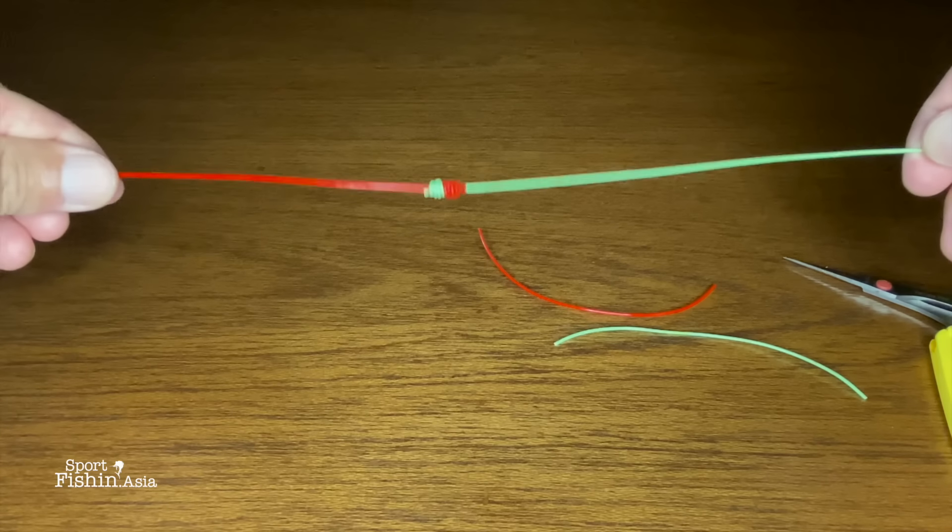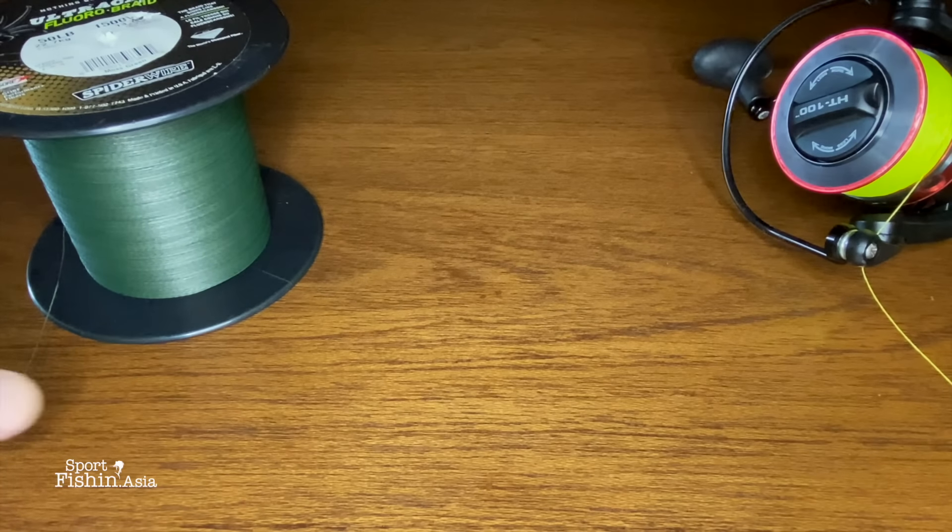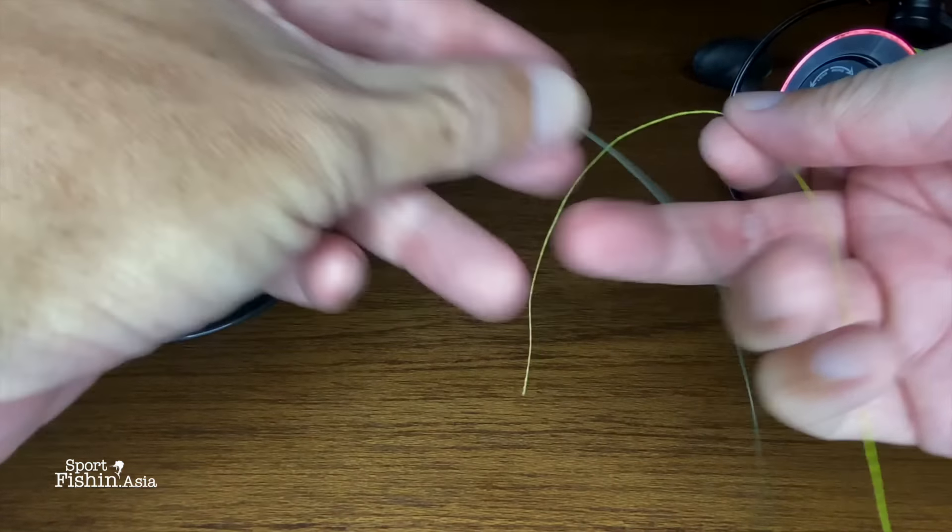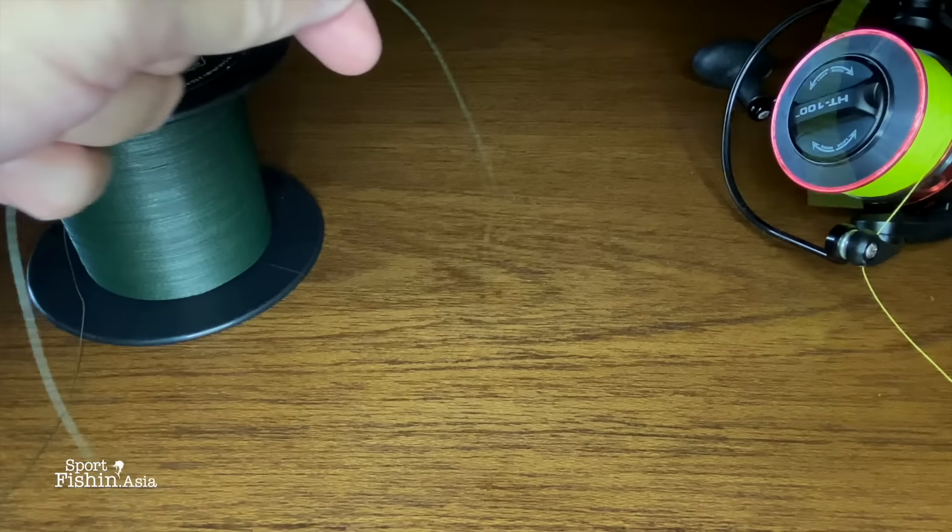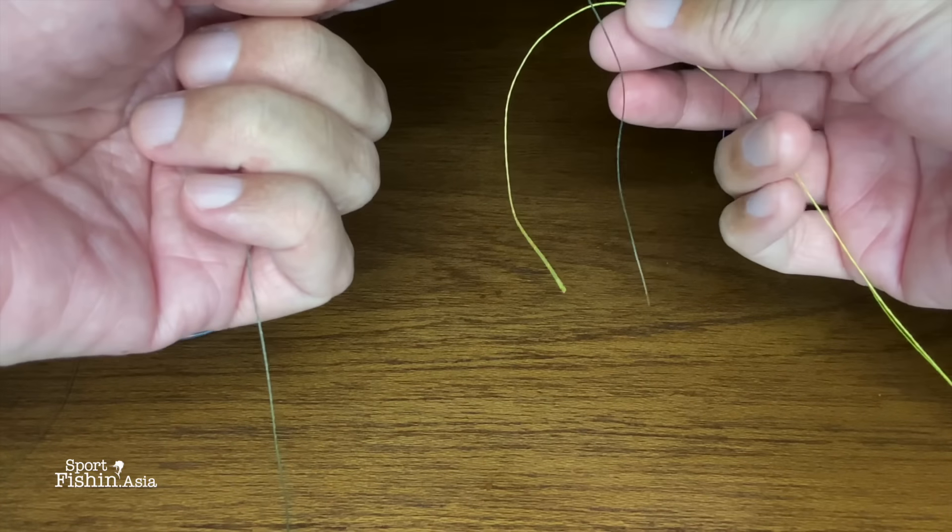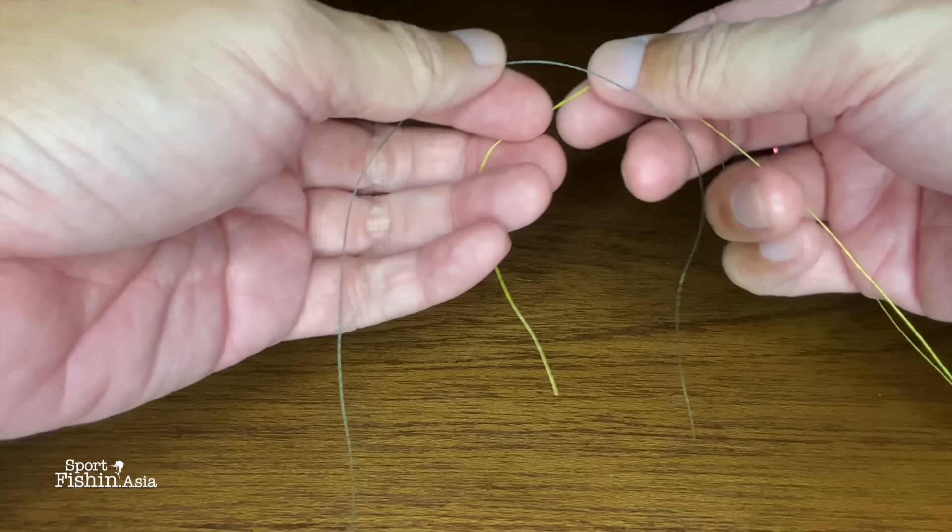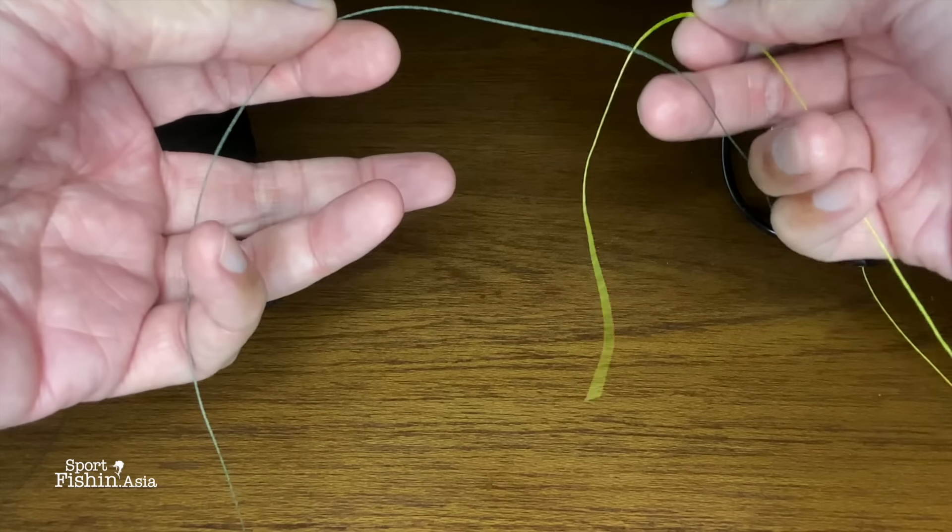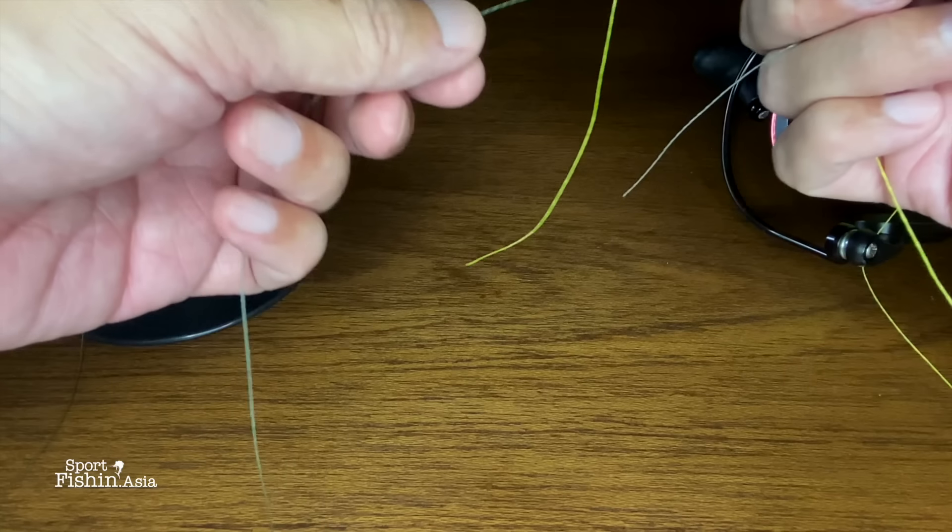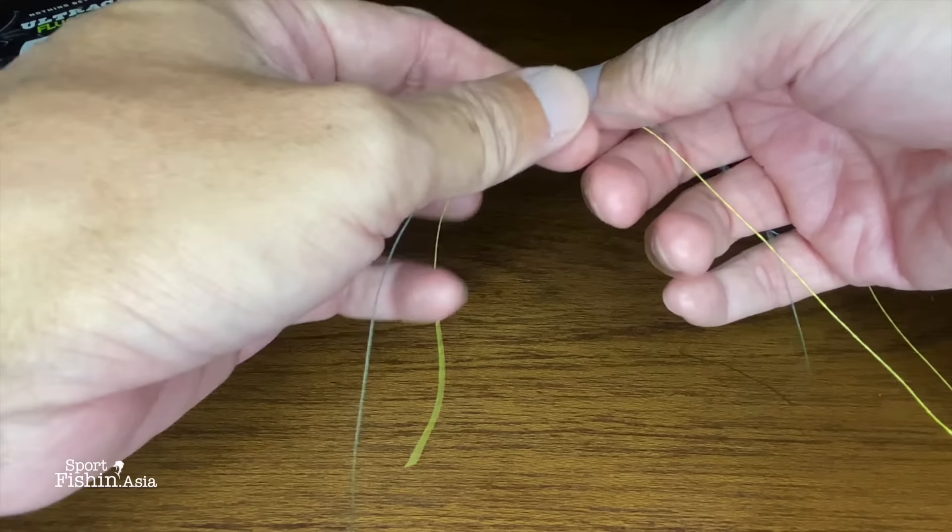So that's how your knot should look like. Now I'm going to show you the same knot using braided lines. Put both lines over the other, and then you start from one end.